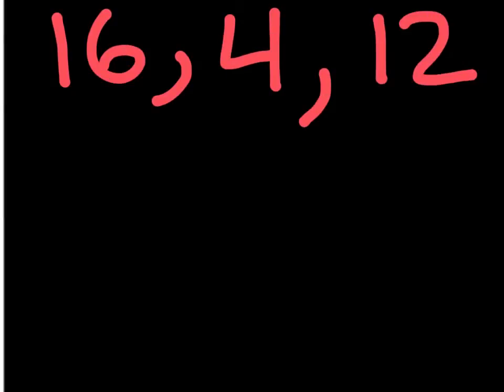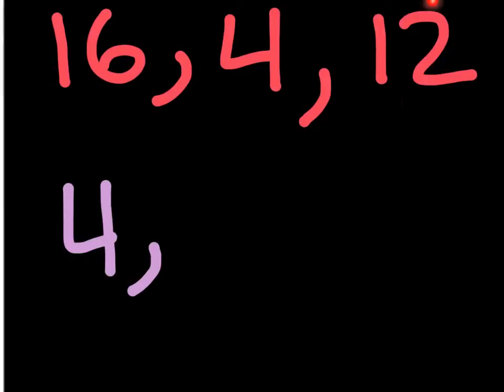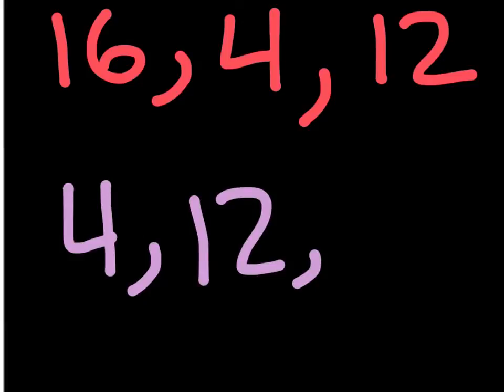So if I give you the list of numbers 16, 4, and 12, and I ask you to order them from least to greatest, you would first find the least number, which is the lowest number. The lowest number would be 4, so 4 would be first in the order. Then you would find the second lowest number, which would be 12, so 12 is second. And then the largest, or third lowest number, would be 16, so that is the last number in the least to greatest order.